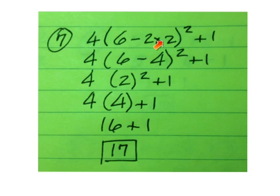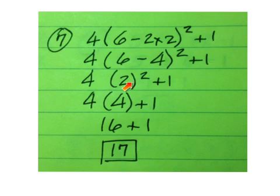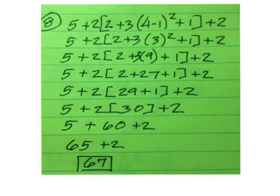On number 7, you have to go to the parentheses and do multiplication first. Don't do 6 minus 2 — do 2 times 2 to get 4. Subtract it from 6. That's a 2. Square that. You get 4 times 4 is 16, plus 1 is 17.